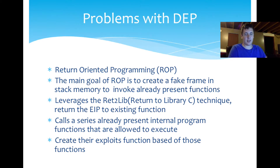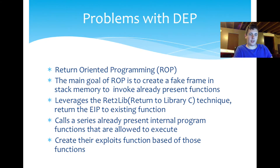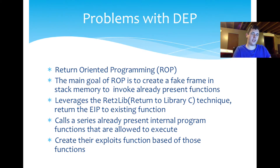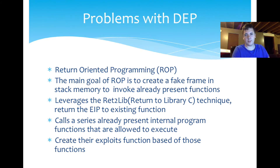The main problem with DEP is a technique called return-oriented programming (ROP). Instead of leveraging malicious code in a different memory allocation, ROP utilizes existing functions that are already allowed to execute in memory. You gain control over the EIP and point it at an existing function that the program is already using, then write your exploit using only those already-permitted functions. It's a different style of exploit writing, but in the end it does the same thing — it's there to own the system.